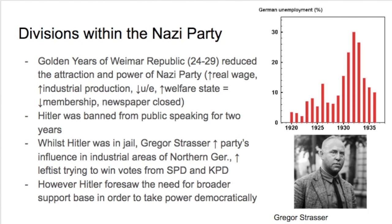During the golden years of the Weimar Republic, they controlled inflation, real wages went up, industrial production went up, unemployment went down, and a welfare state was created providing support to the unemployed. This led to declining membership of the Nazi Party. As you can see in the graph, we have a peak around 1925-1926, and then during these golden years into 1929, we have a decrease in Nazi party membership.